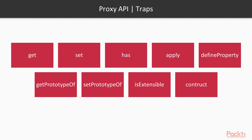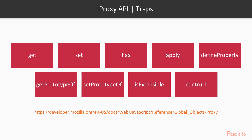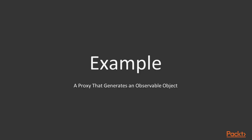Besides the get and set traps, the Proxy API also offers other traps such as the apply trap, which can be used to get access to arguments and control the execution of a function's internals. You can read more about them on the MDN page for the Proxy API.